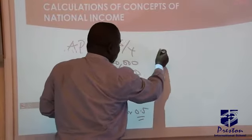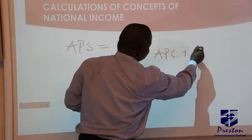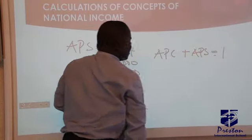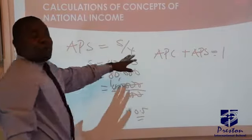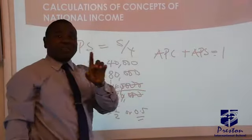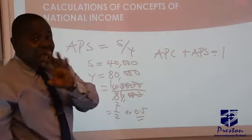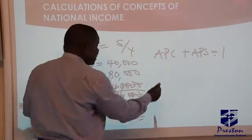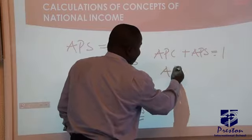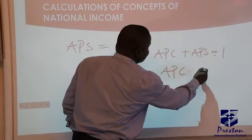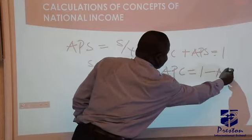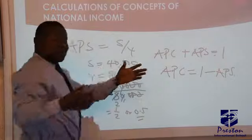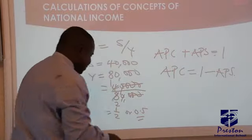There is something that connects the two: APC plus APS is equal to 1. That means if you have calculated your APC, you can easily get your APS by subtracting. We can make APC the subject of the formula: APC is equal to 1 minus APS. And we can do the same thing for APC.